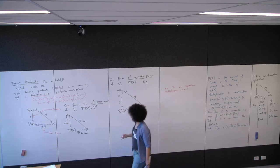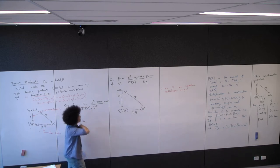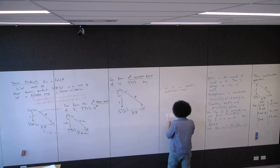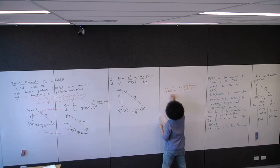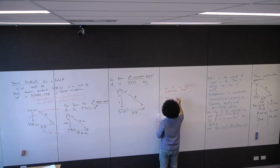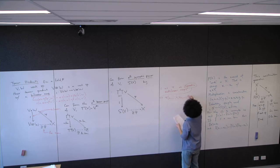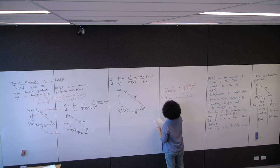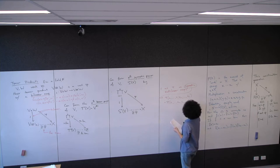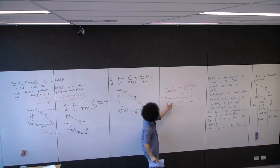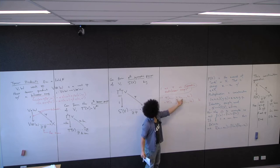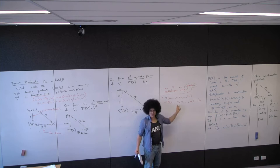Now we want to put conditions on these things: ι and φ are symmetric multilinear maps. Multilinear means n-linear. Symmetric means φ(v_1, …, v_i, v_{i+1}, …, v_n) = φ(v_1, …, v_{i+1}, v_i, …, v_n) for all i — swapping any two vectors gives the same result.